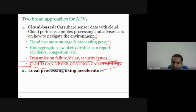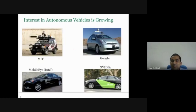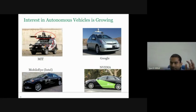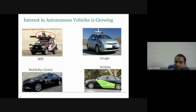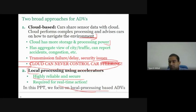We have to use local processing because it is highly reliable, secure, and the car needs to make real-time decisions. This MIT car has many sensors and inside there are computers that dissipate a lot of heat, requiring AC cooling. The car can only go so far given these power constraints. In this presentation, we will focus on local processing-based ADVs.